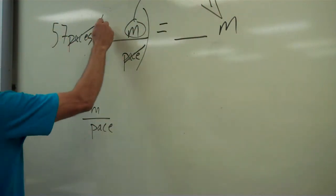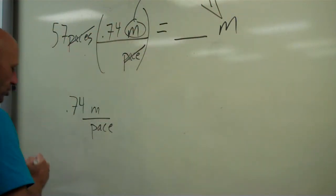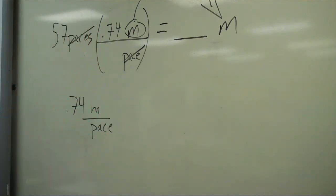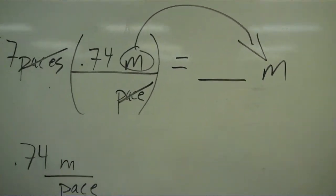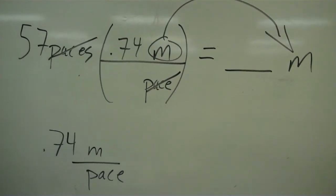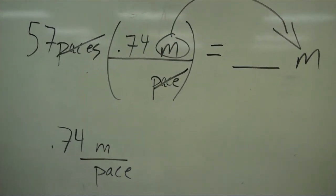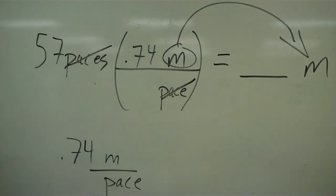We just plug in 0.74. To convert the hallway from a number of paces to a number of meters, we're going to multiply. Go ahead and do all of those now.